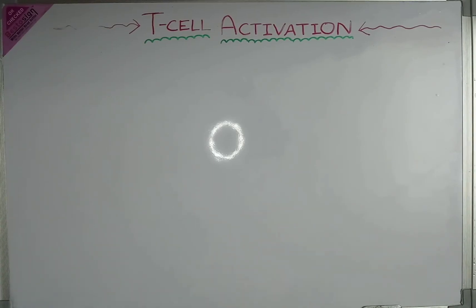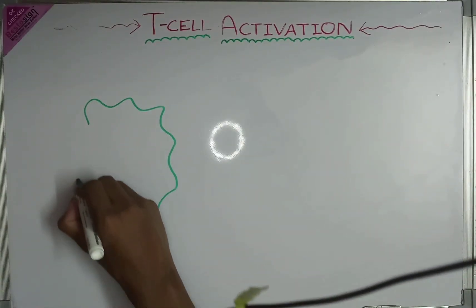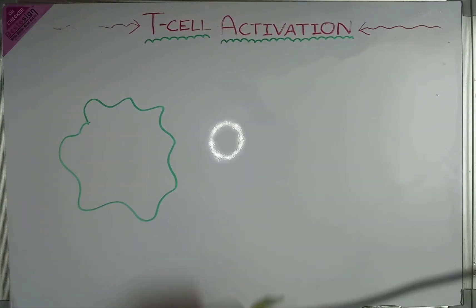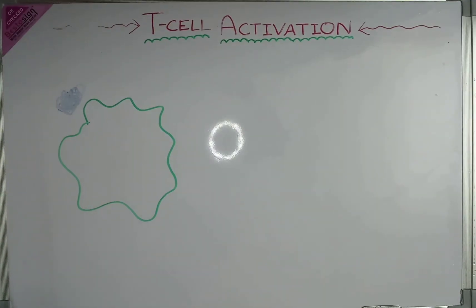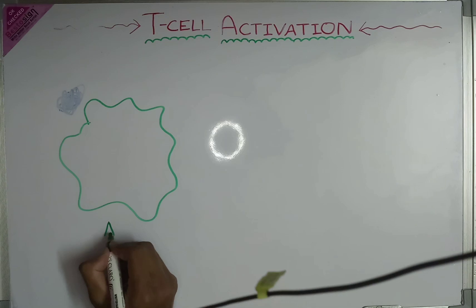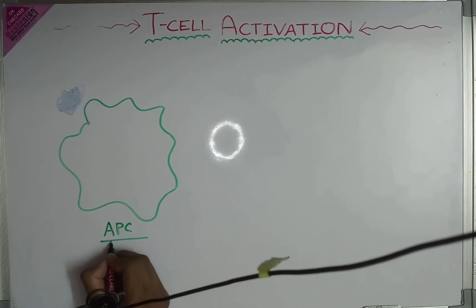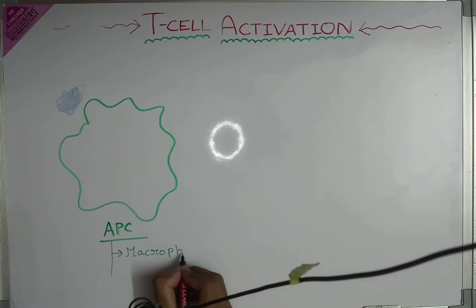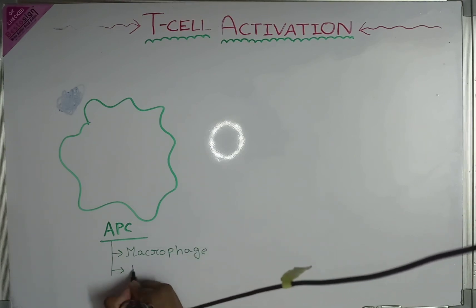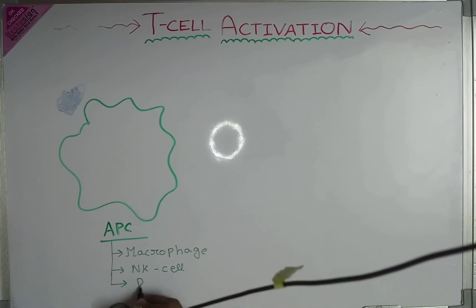Welcome back, friends. I am Rajdeep Acharya, and today we will be discussing T-cell activation — how a T-cell gets activated. Suppose we have an APC cell, which stands for antigen presenting cell, and a foreign antigen. APC cells include macrophages, NK cells, and dendritic cells.